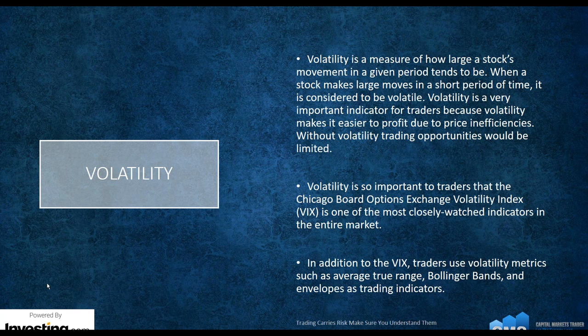Then we have volatility — a measure of how large an asset's movement is in a given period. When an asset makes large moves in a short time, it is considered volatile. Volatility is a very important indicator for traders because it makes it easier to profit from price fluctuations. Without volatility, trading opportunities would be very limited. If you're trading CFDs or Forex, you want an asset that is moving up or down — a good trader can make profit going in either direction. If price is congested and barely moving, you can't make money.